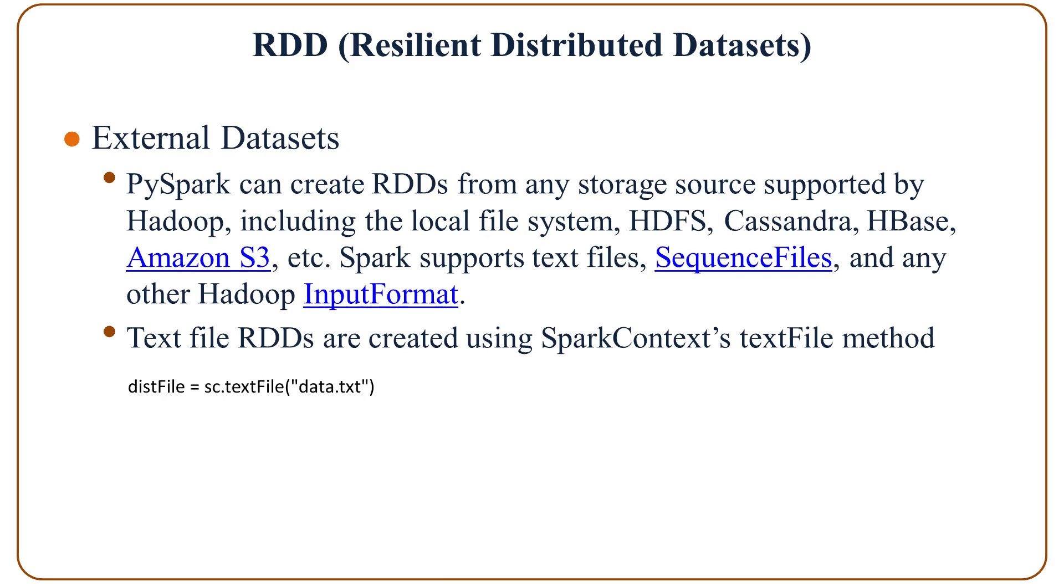Example with the second way: Spark can create resilient distributed datasets from any storage source supported by Hadoop, including the local file system, HDFS, Cassandra, HBase, Amazon S3, etc. Spark supports text files, sequence files, and any other Hadoop input format. Text file RDDs are created using the Spark context's text file method, as we can see in this example. So we give the name of the text file to the text file method of the Spark context.